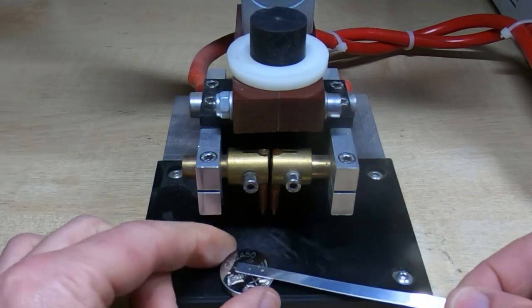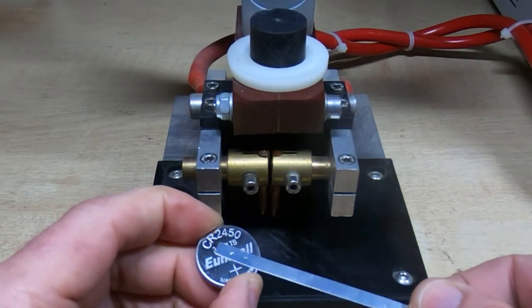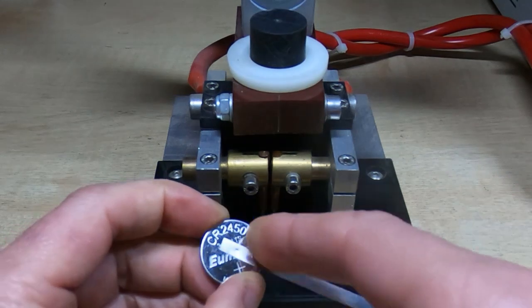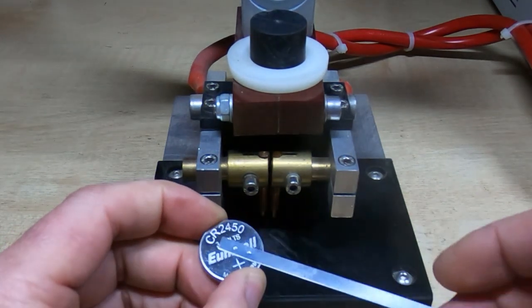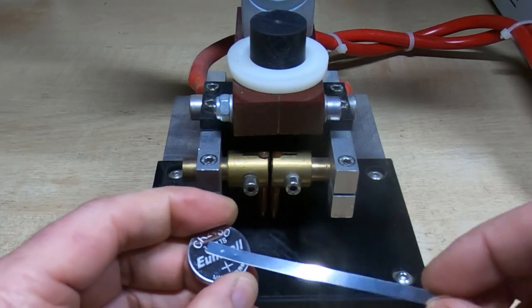And as you can see this is now well and truly welded on. So if you try and pull this off it will actually leave the little tabs where we welded on the coin cell, and you can see it makes an extremely nice joint.